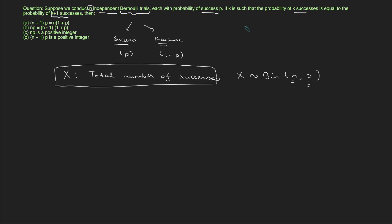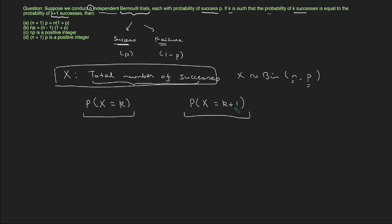Now let's see the other information that we are given. We are given that K is such that the probability of K successes equals the probability of K plus 1 successes. That means the probability that the random variable X equals K is equal to the probability that X equals K plus 1, because X is defined as the total number of successes. So K successes means X equals K, and K plus 1 successes means X equals K plus 1, and these two probabilities are equal.